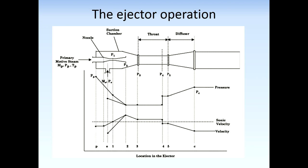The location of the shock wave depends on the back pressure from the condenser. Finally, the subsonic flow enters the diffuser and is compressed isentropically to pressure pc, which is between the generator and evaporator pressures. This is how an ejector operates.